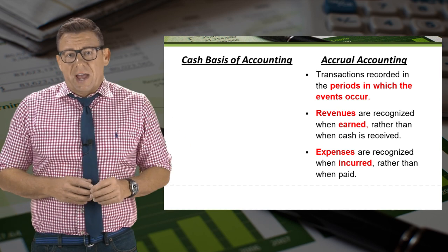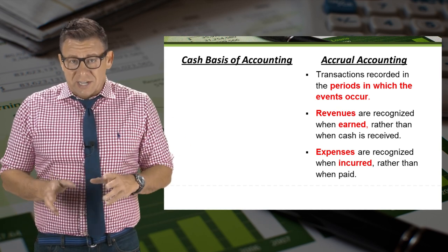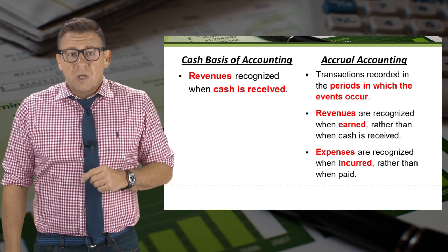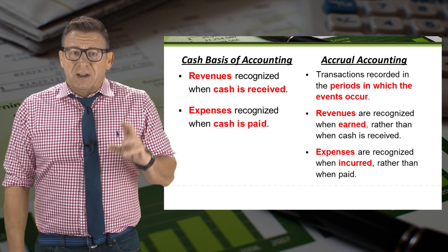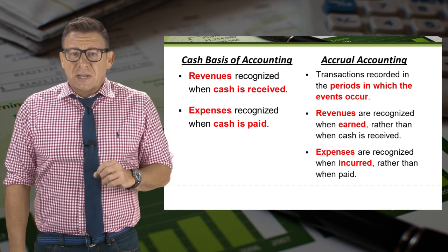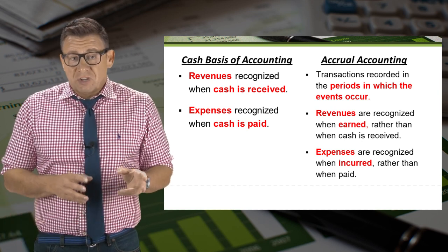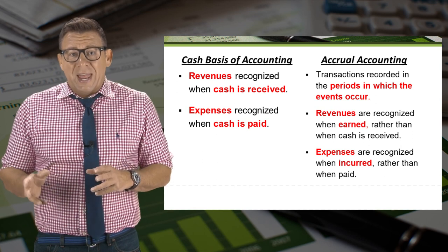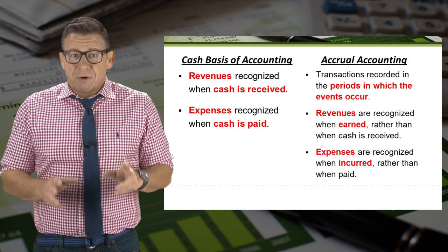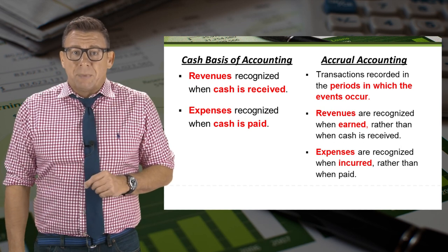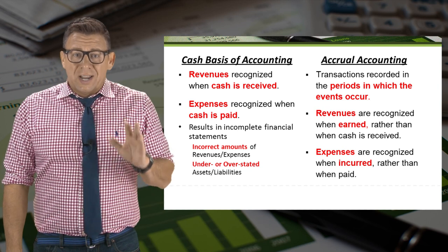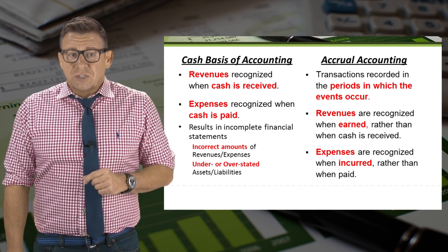For the cash basis of accounting, revenues are recorded when cash is received, and expenses are recorded when cash is paid. The result of this method is that our financial statements are less accurate. Revenues and expenses reported in the month in which cash is received or paid might not provide investors and creditors with the best performance information about a company, and likely lead to overstated or understated amounts on our balance sheet.